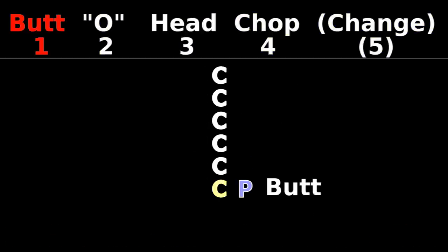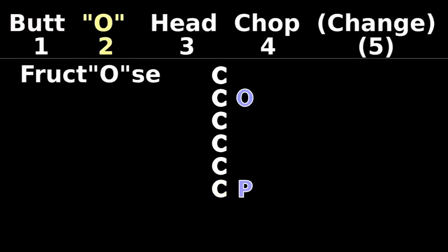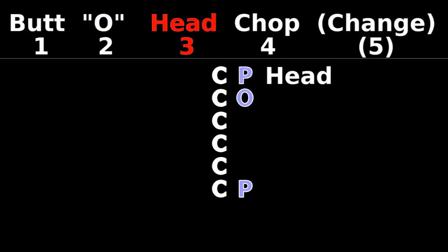1. On the butt, add a phosphate. 2. Make it fructose, on carbon two. 3. On the head, add another phosphate.